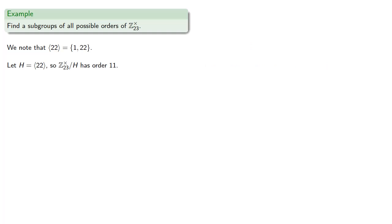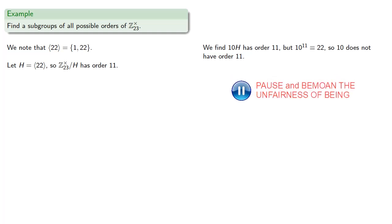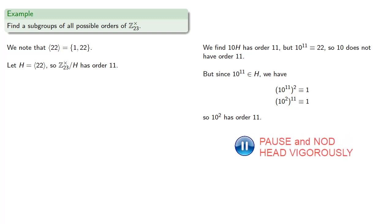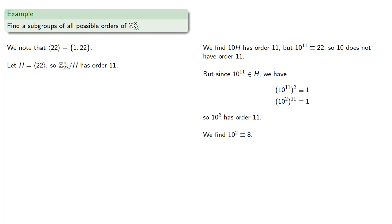Again, we'll pick a random element, say the coset 10H. We find the coset 10H has order 11, but 10 to the 11th is congruent to 22, so 10 does not have order 11. But since 10 to the 11th must be an element of our subgroup H, and H has order 2, we know that 10 to the 11th to the 2nd must be congruent to 1. And since the exponents are counts, we can switch the order: 10 to the 2nd to the 11th is still congruent to 1, and so 10 to the 2nd must have order 11. We can actually compute that: 10 to the 2nd is congruent to 8 mod 23, and so 8 has order 11.